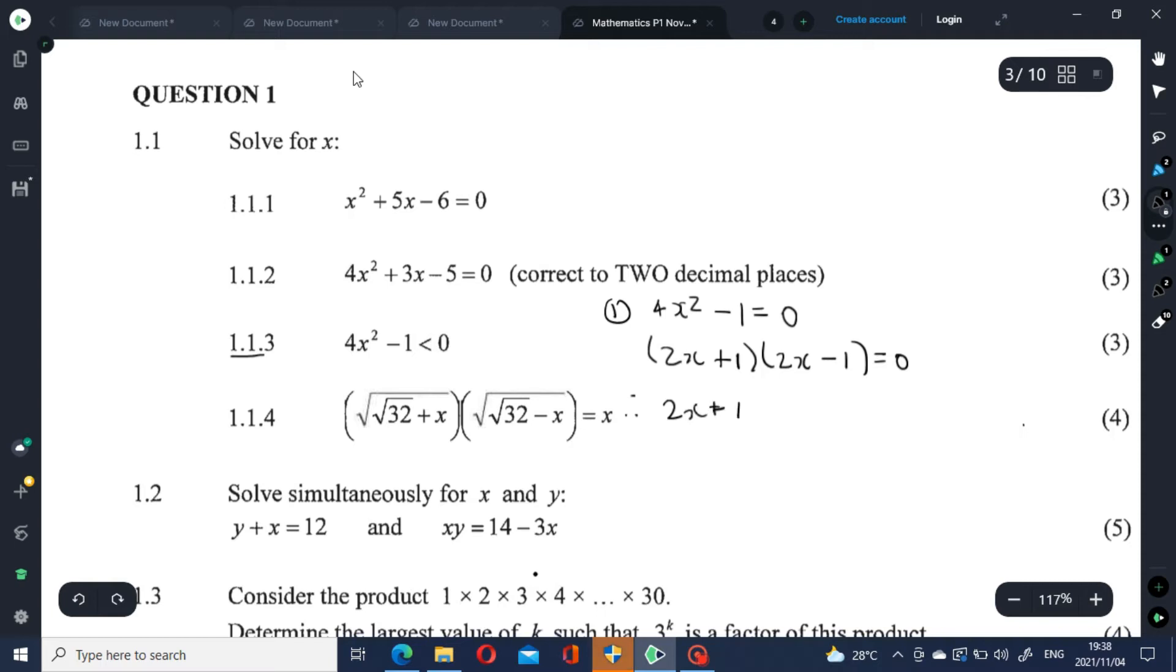So the solutions are 2x plus 1 equals 0 or 2x minus 1 equals 0. Therefore, 2x should be equal to minus 1 or 2x should be equal to positive 1. Divide both sides by 2 for both solutions.